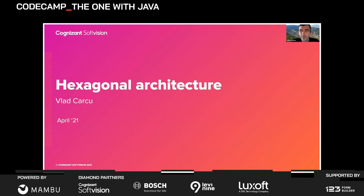Thanks for the introduction, hopefully everybody's going to have fun. Let's get down to business: what is hexagonal architecture? First of all, it's a concept formalized by Alistair Cockburn. Alistair Cockburn is one of the original proponents of Agile, so he contributed to the software development world not just from a technical perspective but also from a process perspective.